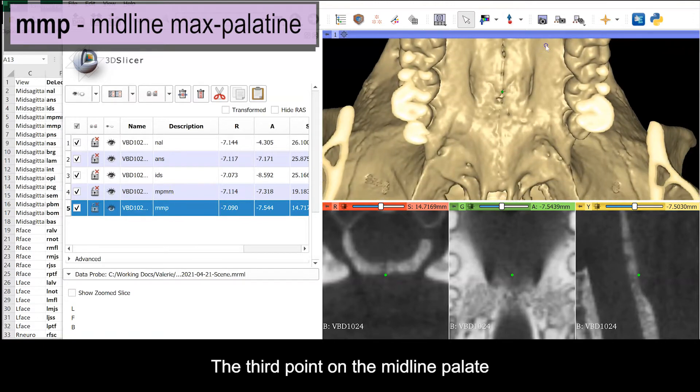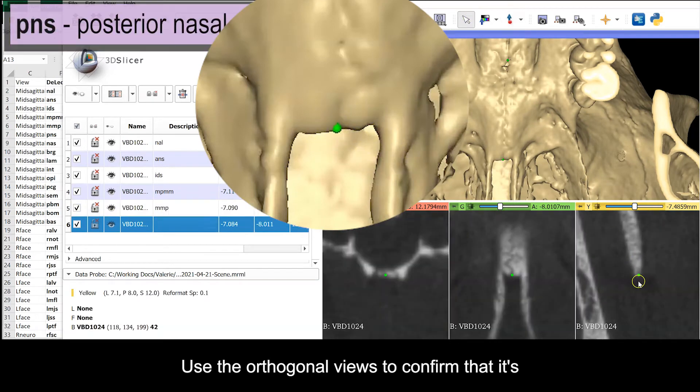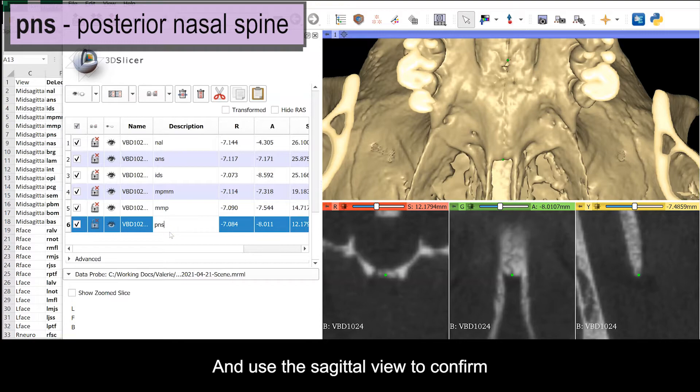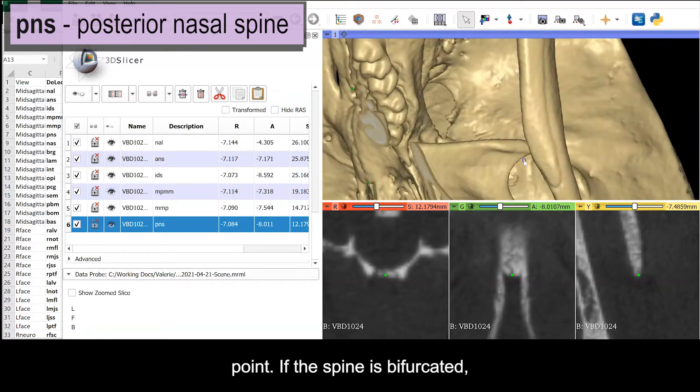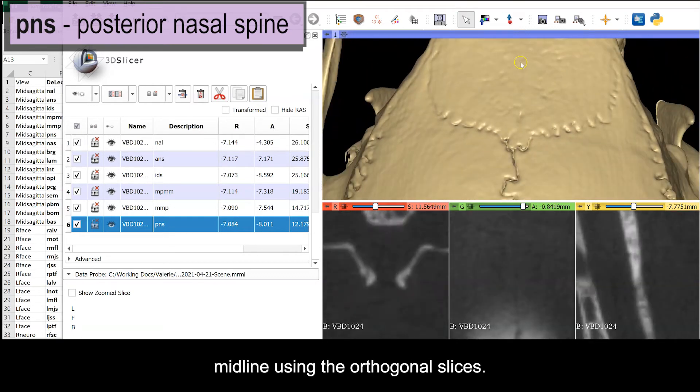The third point on the midline palate is the posterior nasal spine. Use your orthogonal views to confirm that it's placed on the mid-palatal suture and use the sagittal view to confirm that it's placed on the most posterior or caudal point. If the spine is bifurcated, you'll need to project it to the midline using the orthogonal slices.